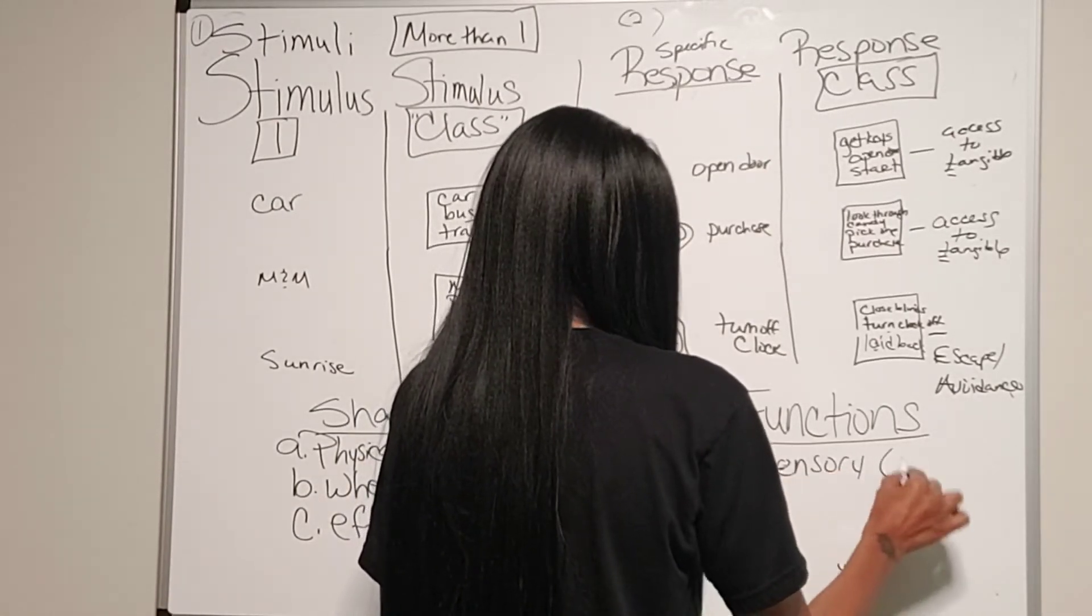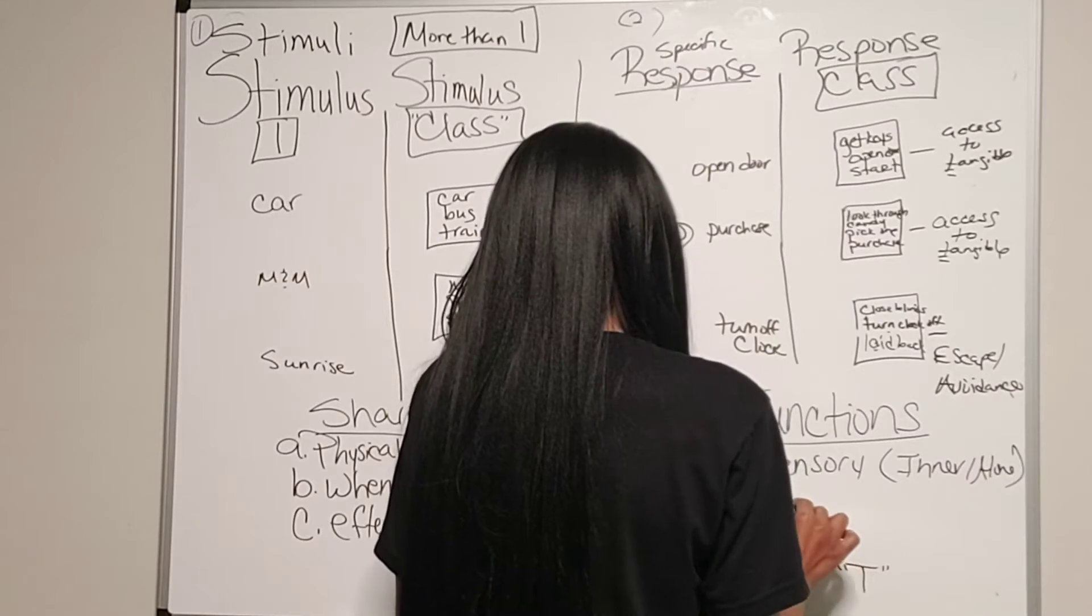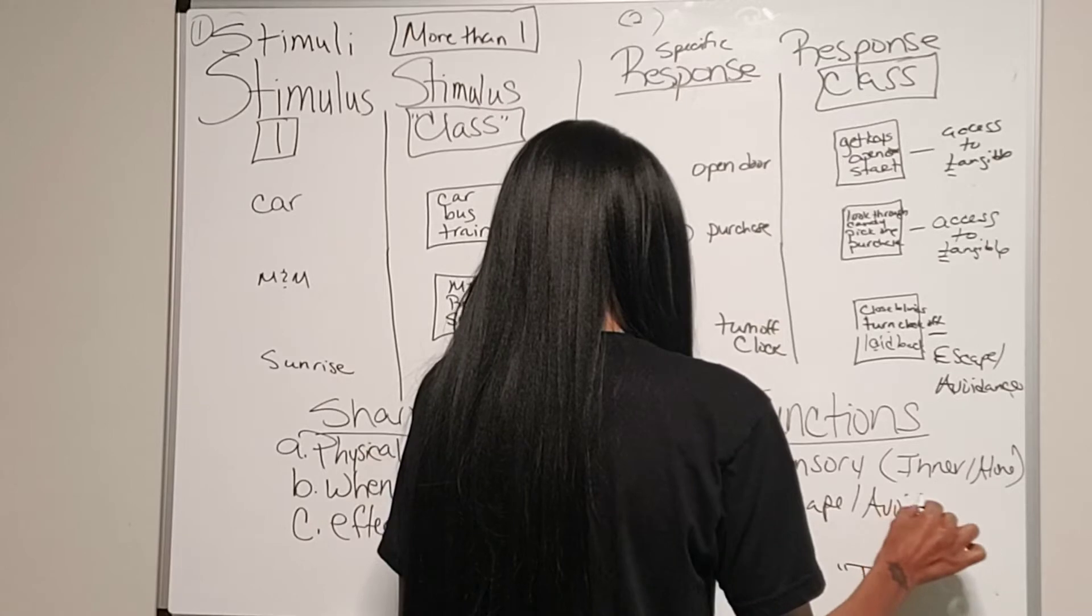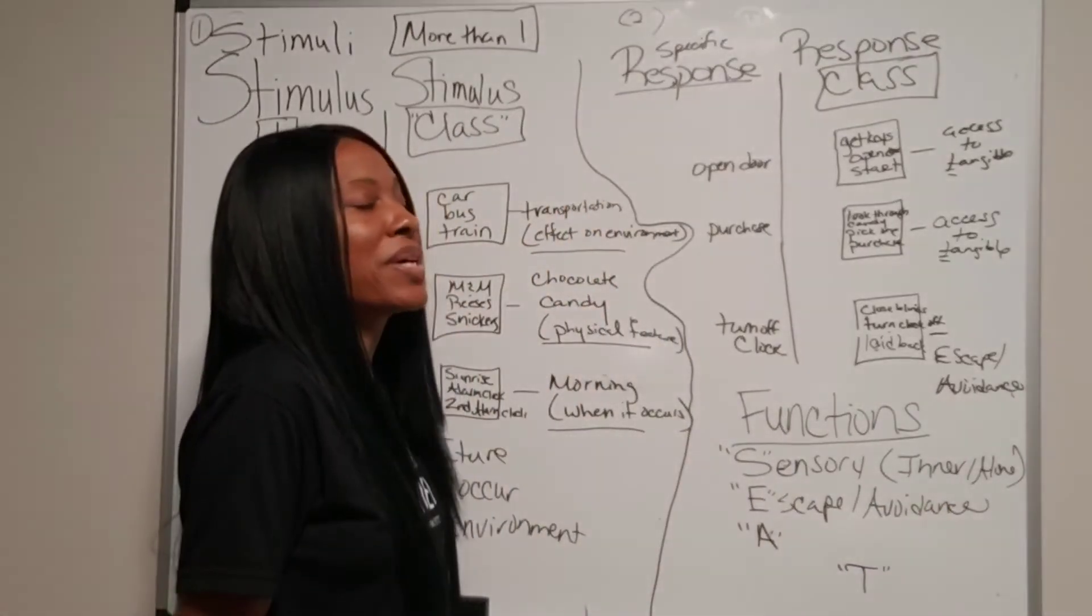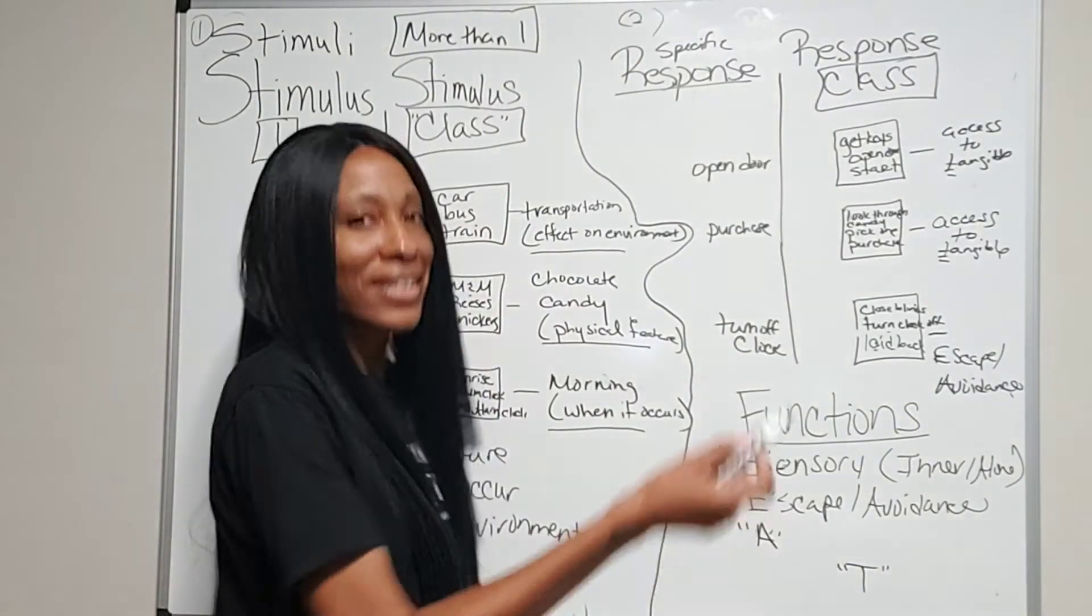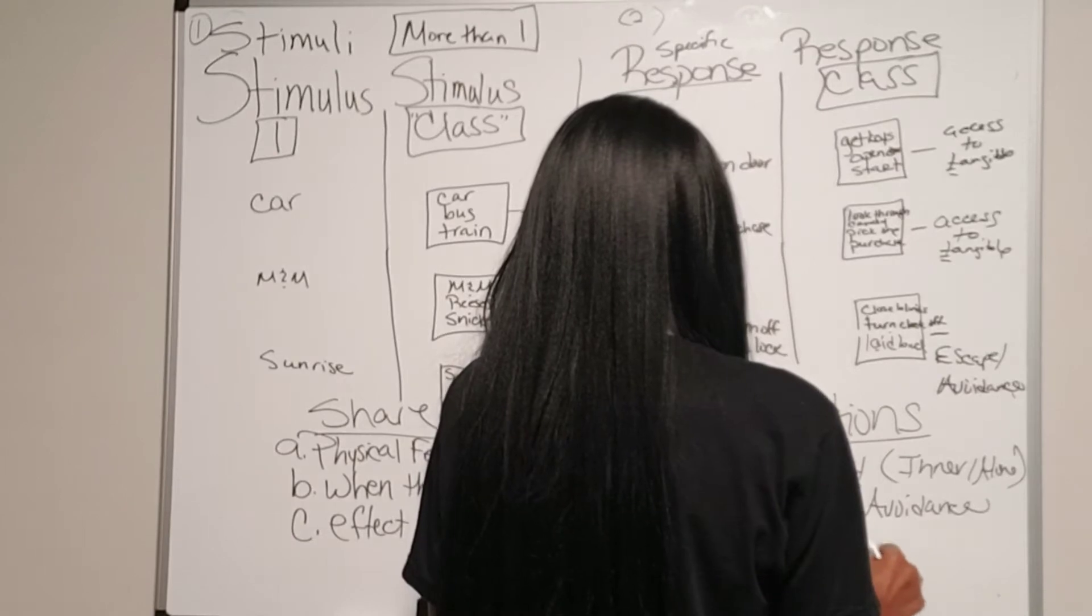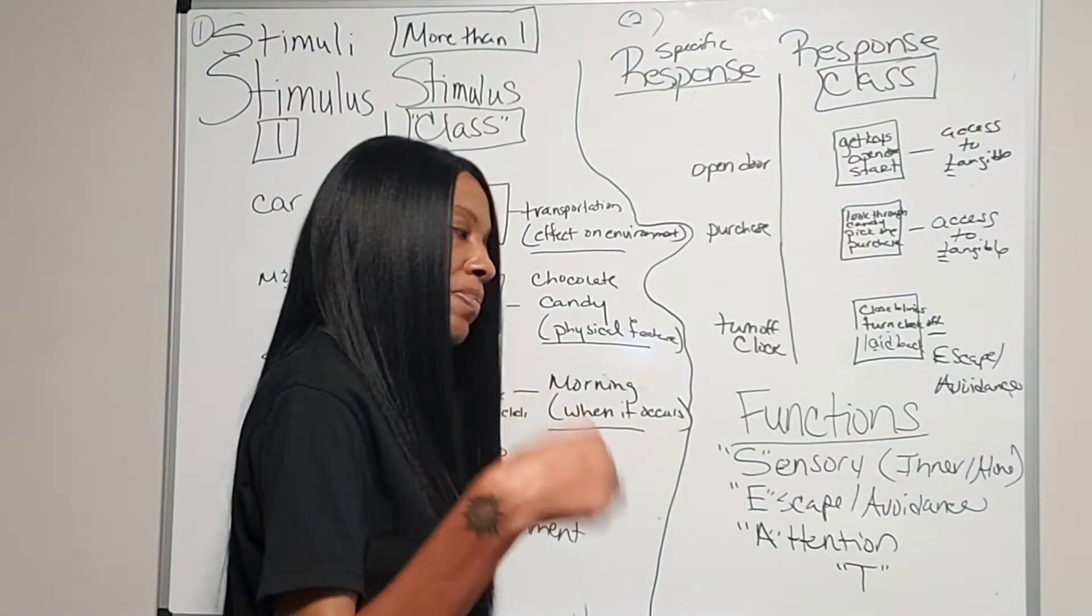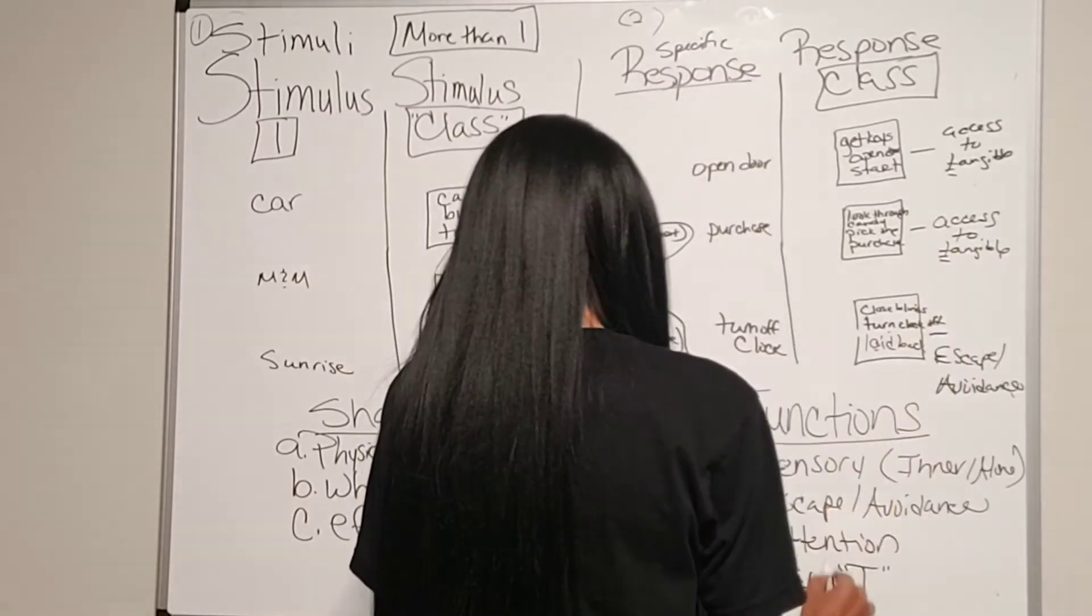So, you have sensory, and sensory means a lot of it is inner or alone conditions. And then you have escape avoidance, which means they're trying to get out and do something or you're avoiding doing something. When your husband is sitting in a car an extra 30 minutes because he's avoiding having to come in and get his honey to-do list, that's avoidance. Attention. A lot of times the behavior is happening because you're trying to get the attention of someone or attention from something. And this last one is access to tangibles.